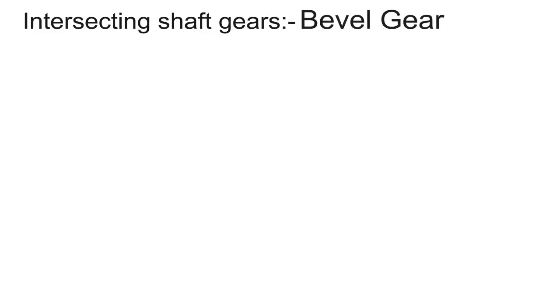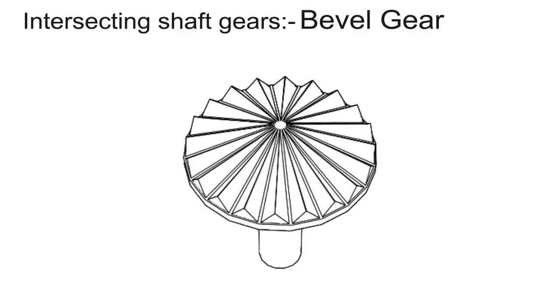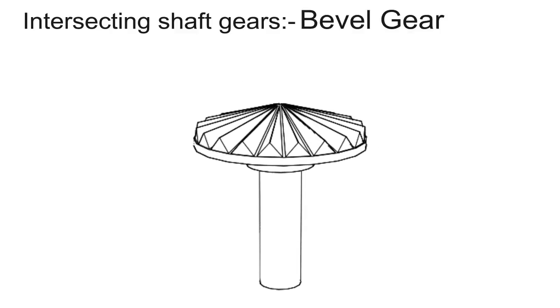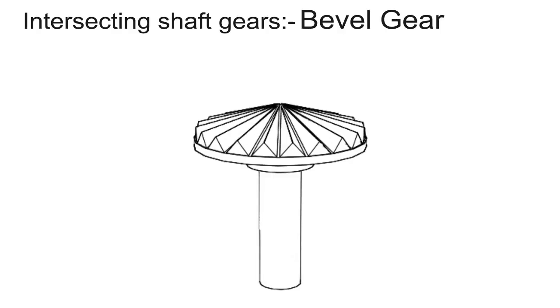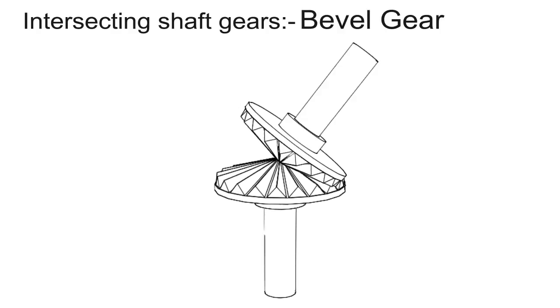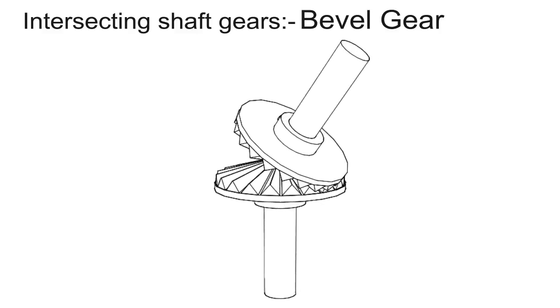Intersecting shafts. First one is bevel gear. Bevel gears are primarily used to transfer power between intersecting shafts. The teeth of these gears are formed on a conical surface. They become noisy above 1000 feet per minute. Straight bevel gears have straight teeth.